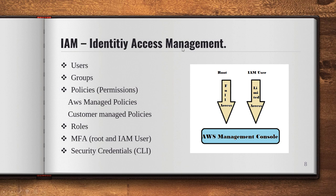IAM is Identity Access Management. We can create users. As a root user, I can hire an IAM user for my AWS management, assign that IAM user to a person, and they can use all services which I assign. IAM includes: Groups, Policy, Permission Management, Customer Management, and Roles. Roles define what access that user has.